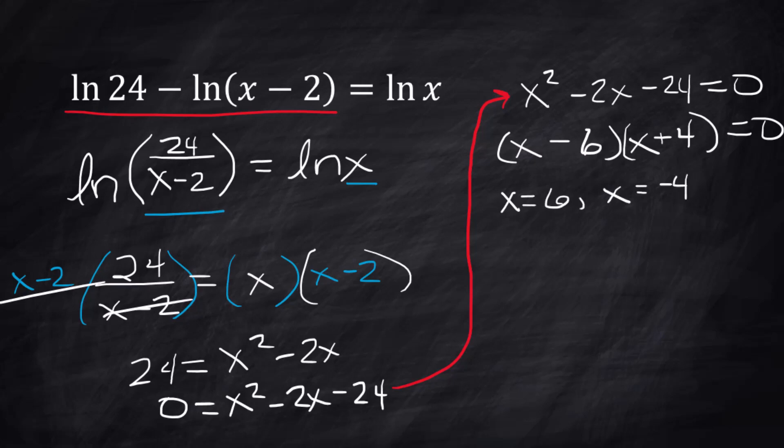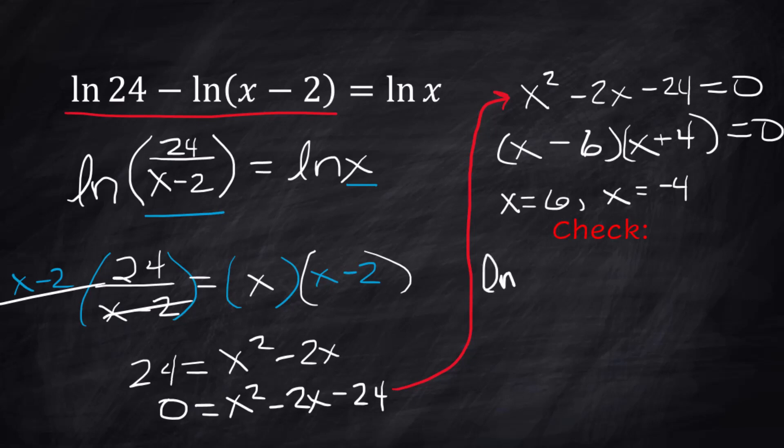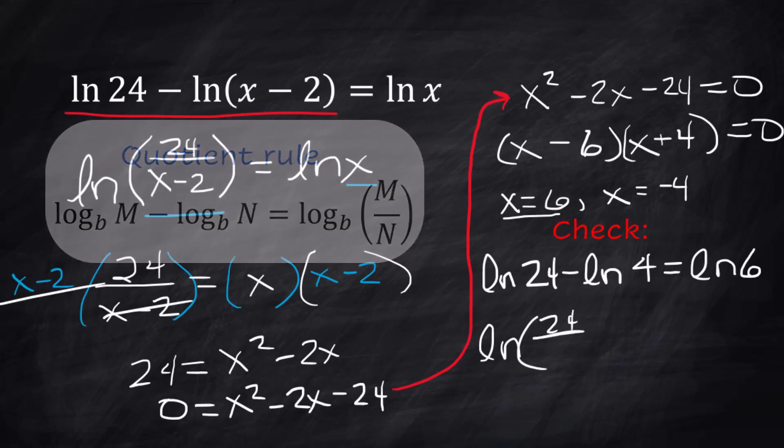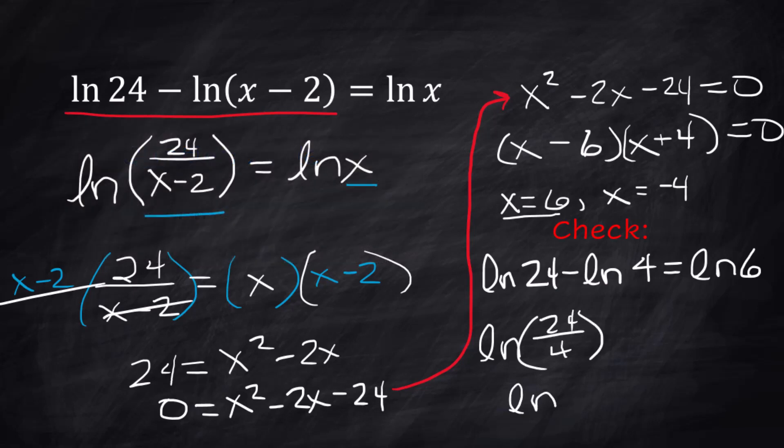Let's just go in and do the check now. If I take the 6 natural log of 24 minus the natural log of 6 minus 2 is 4, does that equal the natural log of 6? Well, without grabbing a calculator, I can see that you're subtracting logs. I'm going to go ahead and use that same property we were using before. And that's a division problem, so you get the 24 over 4. The natural log of 24 divided by 4 is 6, and that does equal the natural log of 6. So that one is going to work.